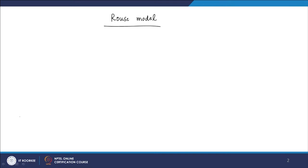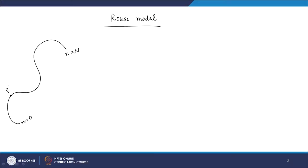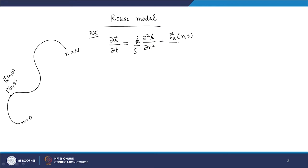To briefly recap, we are talking about the discrete to continuous transformation of the bead-spring model. We have a contour variable n equal to 0 to N, and we talk about the position of a segment R(n,t) and the random force acting on the segment. The original equation is a partial differential equation with boundary conditions.